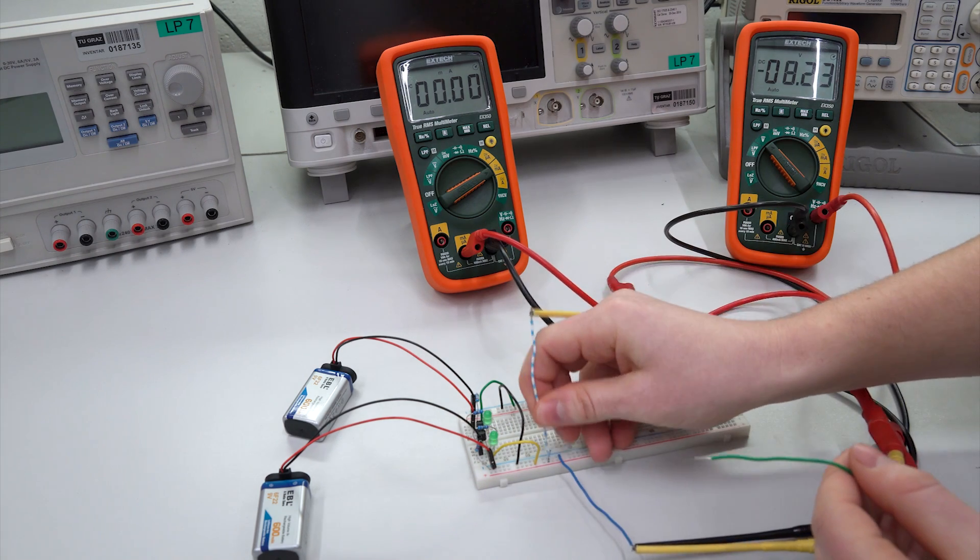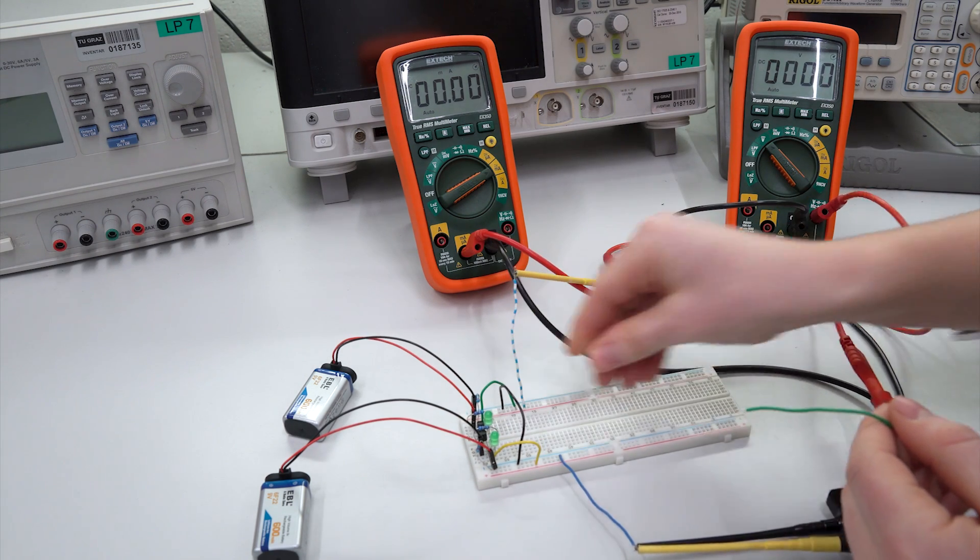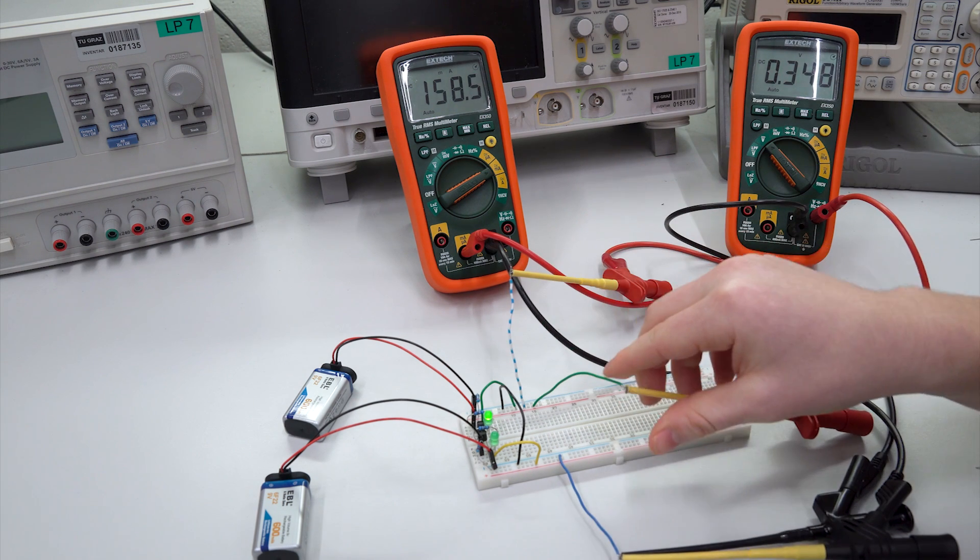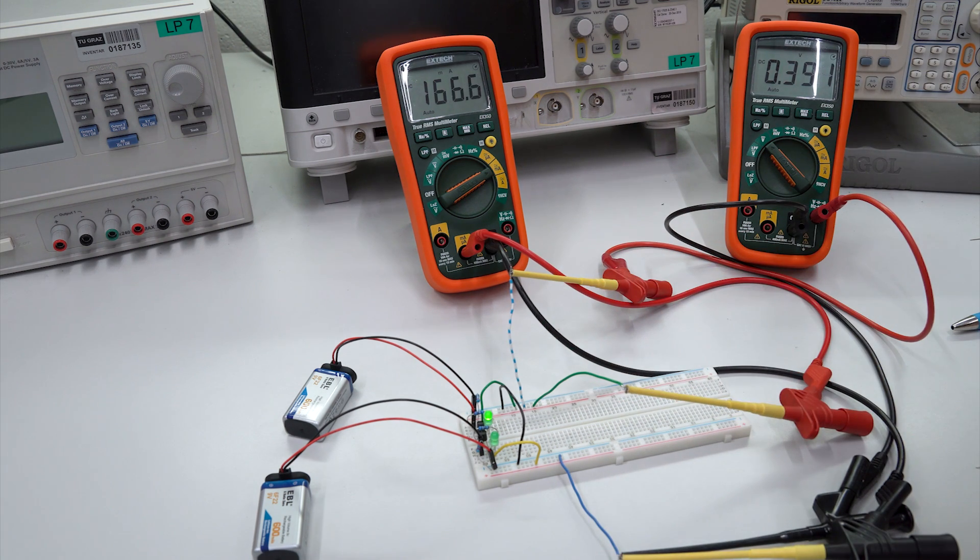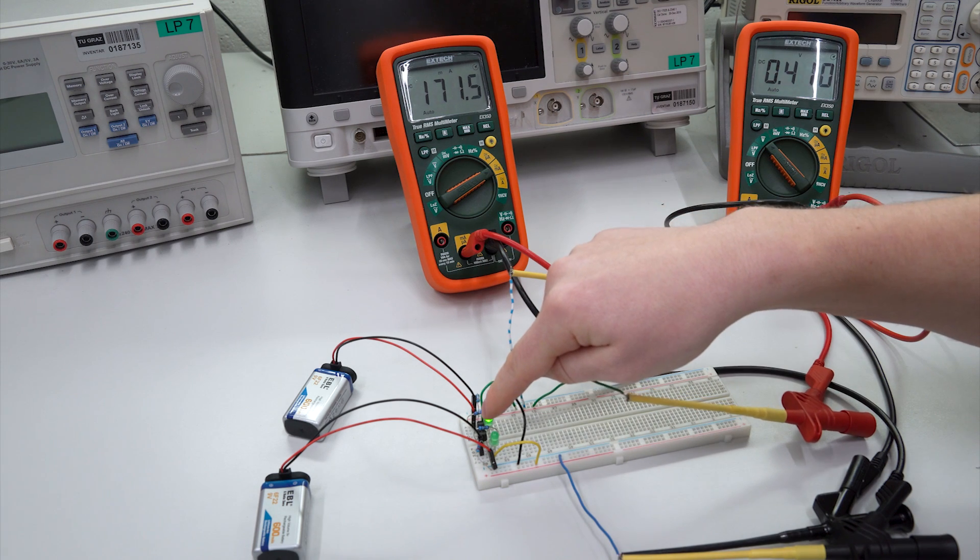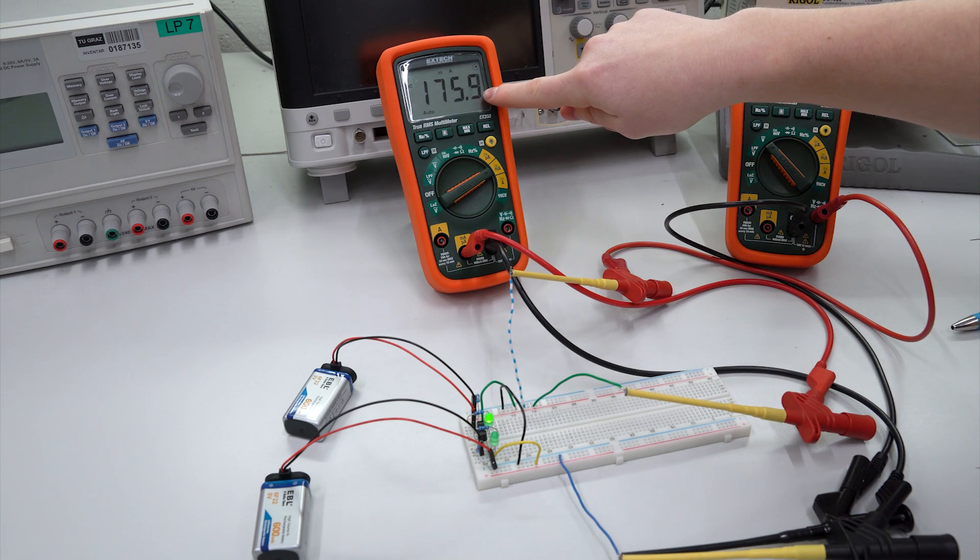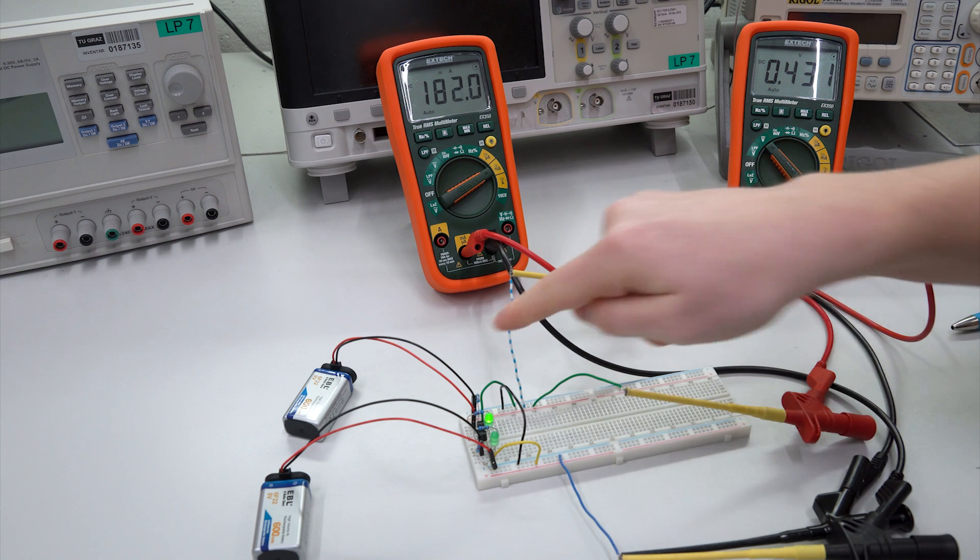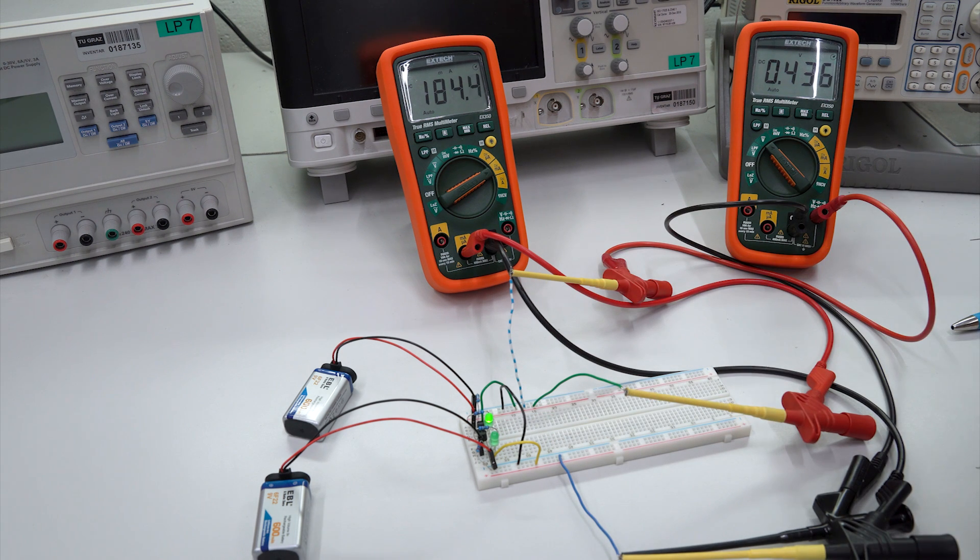So far for the negative supply. Let's do now the same for the positive supply. Let's shortcut it. So again the LED turned on. We draw a little more current. Again it depends strongly on the transistor type and on the base resistor you use. And the voltage also dropped almost to zero.